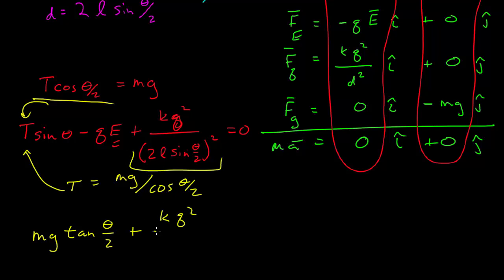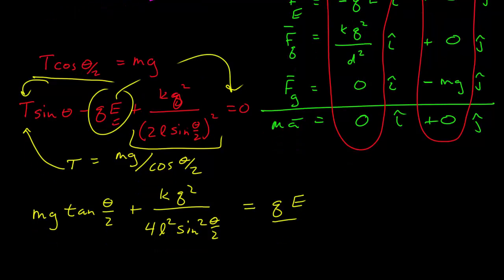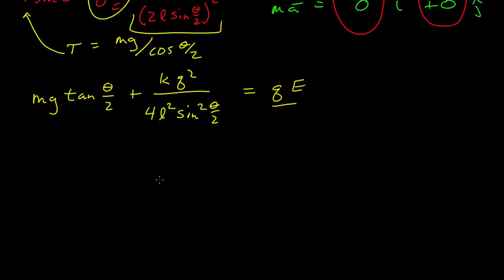k charge squared over 4L squared sine squared theta over 2 is all equal to, if I bring charge times the electric field over to the other side, I get this. Now I just divide by q, and I have my answer.